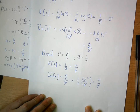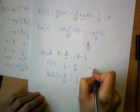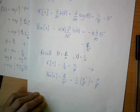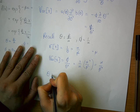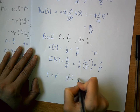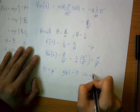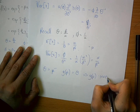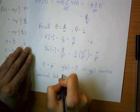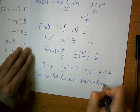What remains is to show how the mean value mu relates back to the canonical parameter theta. The relationship is the inverse: theta = mu^(-1), so g(mu) = theta is the inverse function. This means the canonical link function is the inverse function.